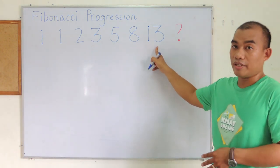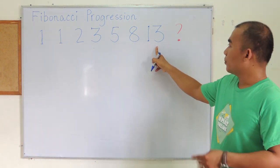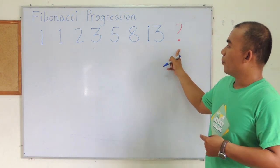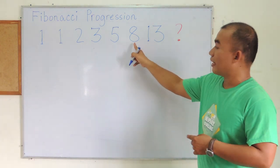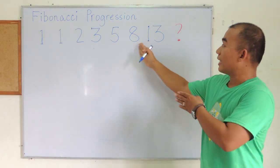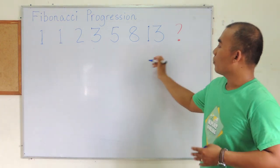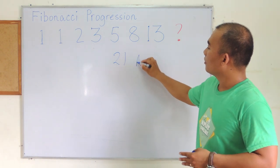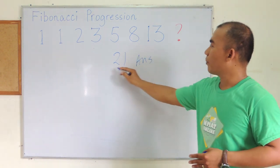5 plus 8 equals 13. To determine the next number, we find the sum of 8 and 13, which is 21.